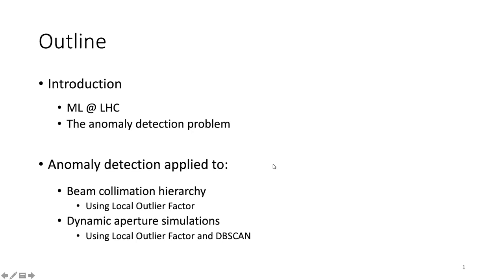These techniques will then be applied to two problems: the first is detecting issues with the beam collimation hierarchy in the LHC using measurements from beam loss monitors, and the second is dynamic aperture simulations — to see whether there are anomalies pertaining to a particular seed or configuration.